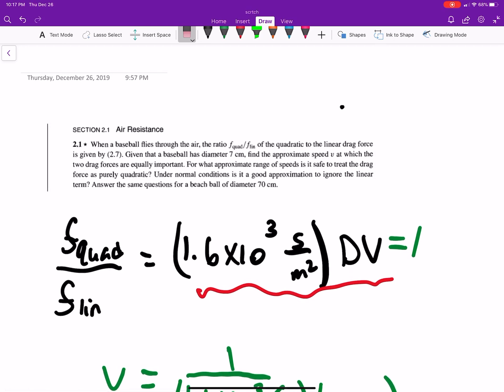Normally for a baseball in everyday life, or everyday world, you would just ignore linear. But when it's going very slow, maybe through a different type of substance, you will have to consider drag.